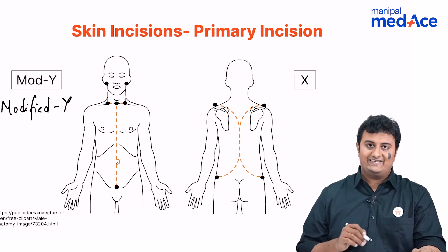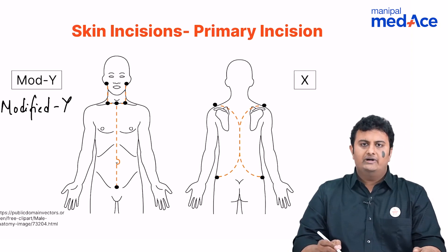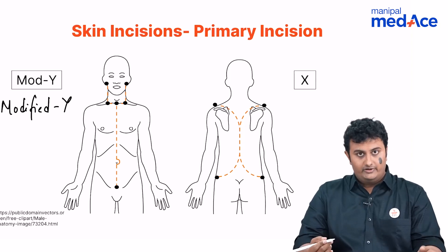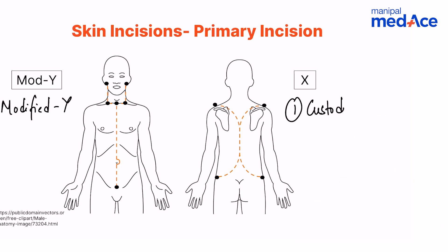Another type of incision is the X-shaped incision. This cruciate type of incision is placed over the back. It is used first and foremost in custodial deaths or torture deaths — which could also follow interrogation done by the police. The incision extends from the tip of the acromion all the way down to the outer aspect of the gluteus maximus on the same side, and the same is done on the opposite side.